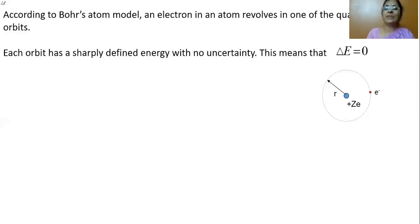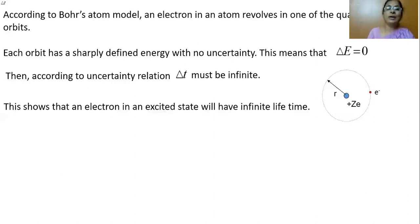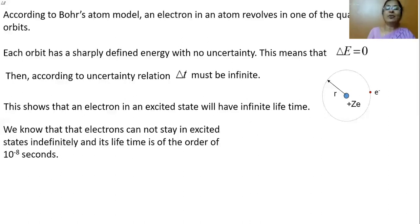So if it is exact, then we can say the uncertainty in measuring the energy of the electron in that orbit is delta E equal to zero. Then according to the uncertainty relation for the pair of variables energy and time, if delta E equals zero, automatically delta t must be infinite. This shows that an electron in an excited state will have infinite lifetime, which is in contradiction to reality.